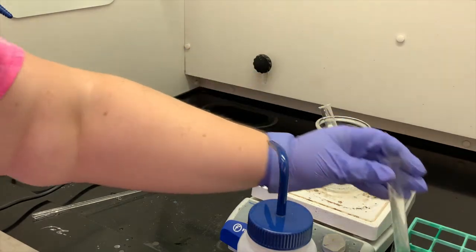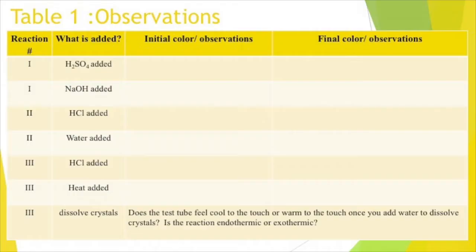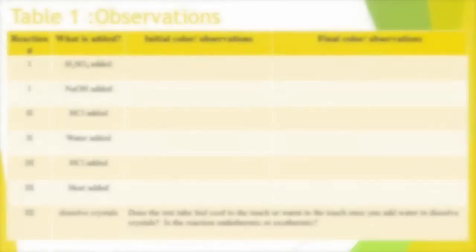Okay, so you should be able to make all of your observations at this point. We've gone through three different reaction types. In Table 1, you're just recording initial observations followed by what happens when we add whatever stress it was.